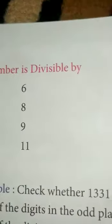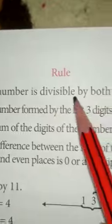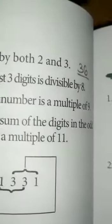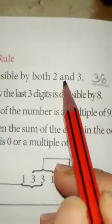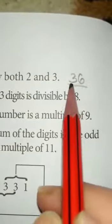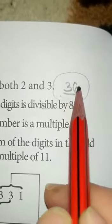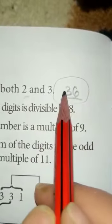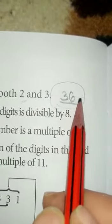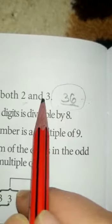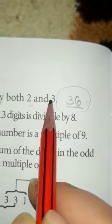Next is the divisibility rule for 6. The rule is: if the number is divisible by both 2 and 3, it means it is divisible by 6 also. Like 36 — it is ending at 6, so it is divisible by 2. The sum of digits 3 + 6 = 9, which means it is divisible by 3. Since it is divisible by both 2 and 3, it is also divisible by 6.